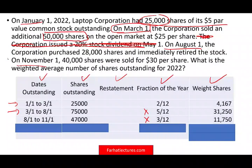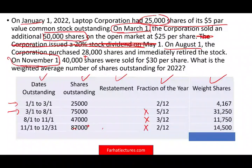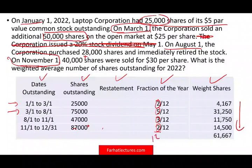On November 1st, the company issued 40,000 new shares. We had 47,000 and added 40,000, giving us 87,000 shares from November 1st through December 31st. That's 2/12 of the year. So: 87,000 × 2/12 = 14,500 weighted average shares. Adding all four weighted averages — 4,167 + 31,250 + 11,750 + 14,500 — gives a total of 61,667. The numerators (2 + 5 + 3 + 2) should always add up to 12.